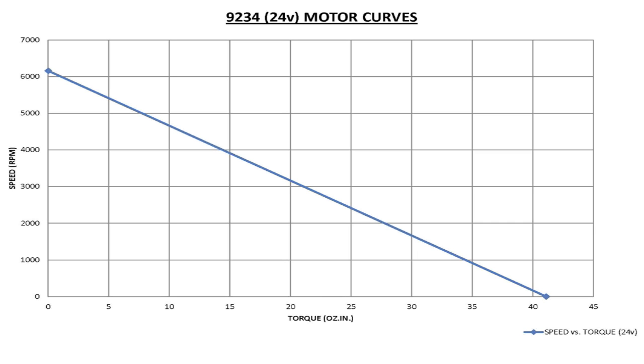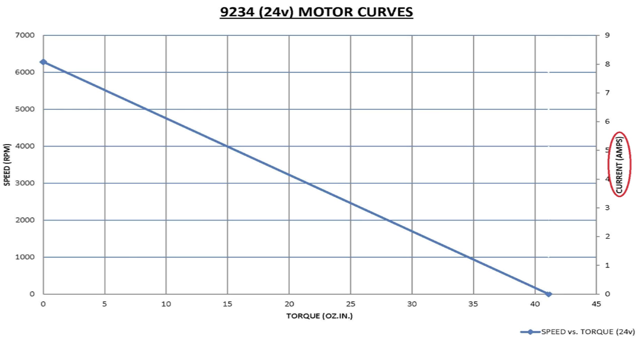Now we need another line that tells us the input requirements to achieve this. This will be our torque current curve. To begin this curve, we need to define the current axis, which uses amps as its units.